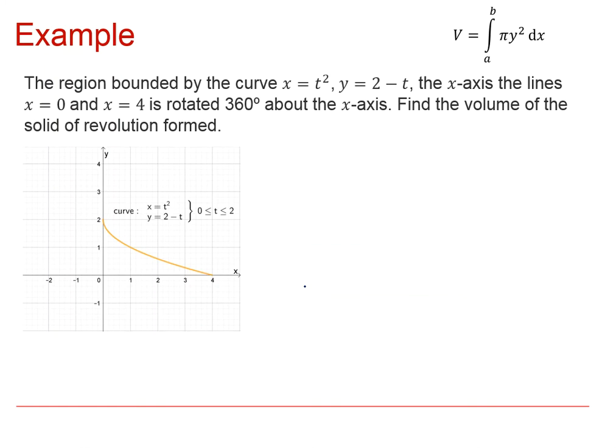So we know what the volume of revolution formula is. It's up here. But in this case, we want to do it in terms of the parameter T. So Y is in terms of T. This bit's fine. But we're going to need to change so that we can integrate with respect to T. We're going to do that by doing the volume will be the integral between A and B of pi Y squared times dx/dt dt. And by doing this, we can change it from an integration with respect to X to an integration with respect to T.